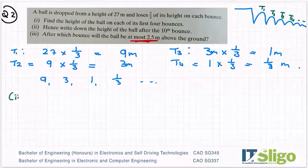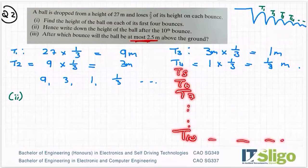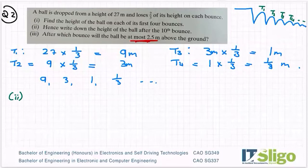Part two. Hence, write down the height of the ball on the tenth bounce. Nothing stopping you working out T5, T6, T7, T8, T9 and eventually T10, and figuring out what height it will be on the tenth bounce. Or you can look out for a pattern.